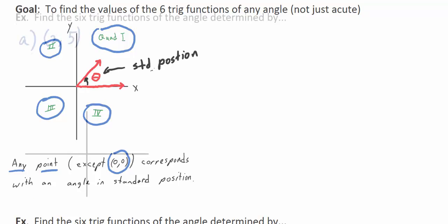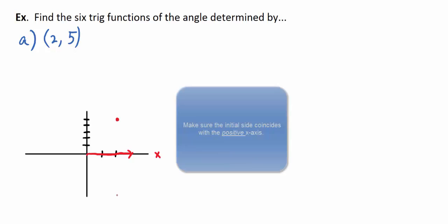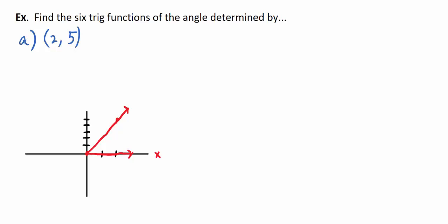I'm going to show you how to extend the trig functions to not just acute angles, but any angle. Let's plot the point (2, 5) — over two and up five. The angle determined by the point (2, 5): you let the initial side coincide with the x-axis, then launch a ray from the origin through that point as the terminal side. That's the angle theta determined by the ordered pair (2, 5).